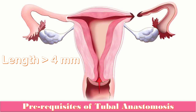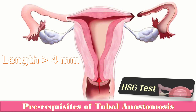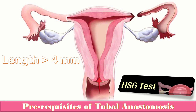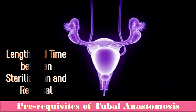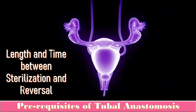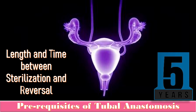Another prerequisite is related to the fallopian tubes. The length of the fallopian tube should be more than 4 mm — that is basically the residual length of the ampullary portion. Secondly, we have to do a hysterosalpingogram to see which portion of the tubes has been tied. Another important prerequisite of tubal anastomosis is the time elapsed between sterilization and reversal.